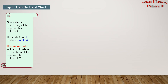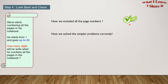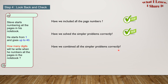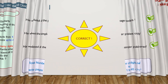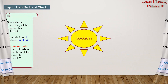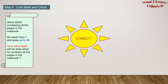Step 4: Look back and check. Have we included all the page numbers? Yes, we have. Have we solved the simpler problems correctly? Yes, we have. Have we combined all the simpler problems correctly? Yes, we have. So our answer is correct — we solved the problem!